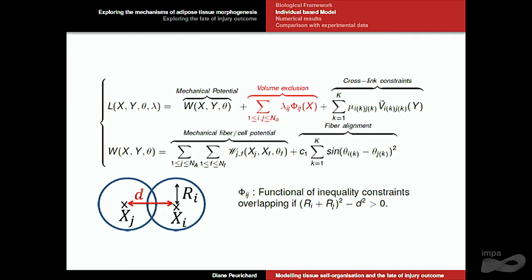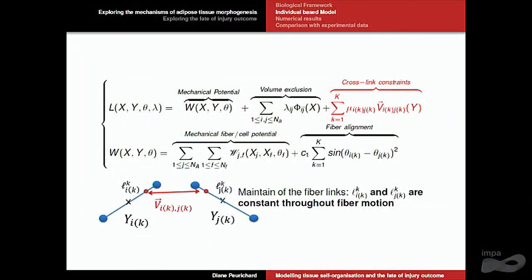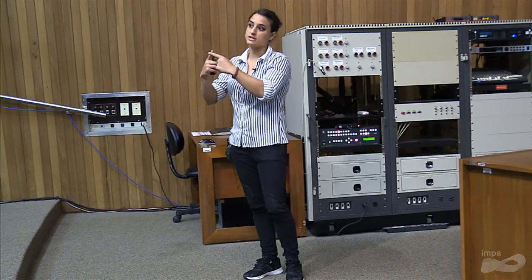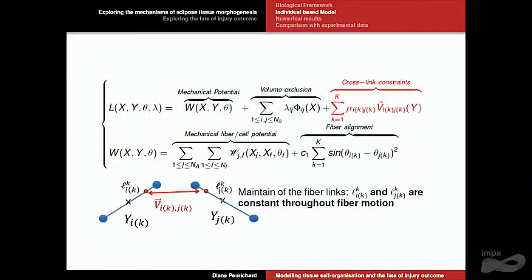Volume exclusion is modelled with a functional that is simply the distance between centres minus the sum of the radii — an inequality constraint because when this function is positive the cells overlap. The crosslink constraint is defined by the functional V between pairs of crosslinked fibres: the function V is the distance of the two attachment sites and must equal zero as an equality constraint, so the attachment sites are maintained during motion.